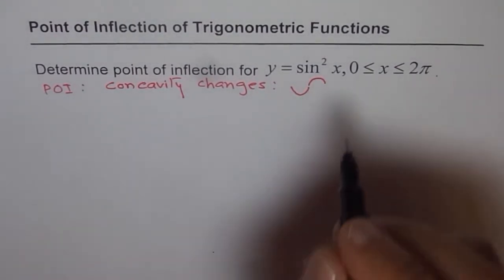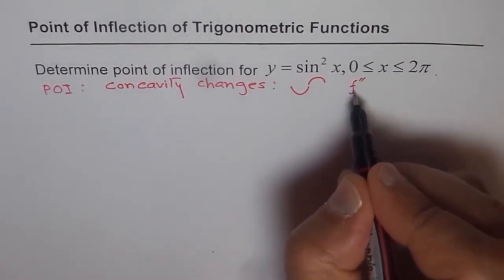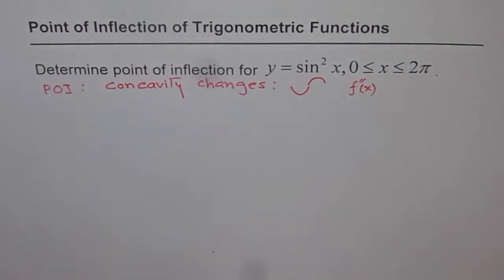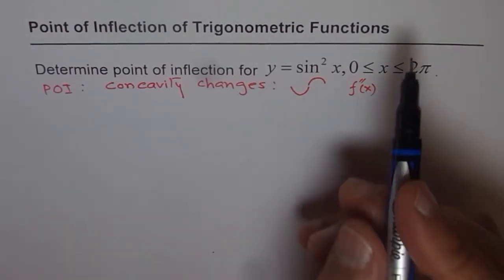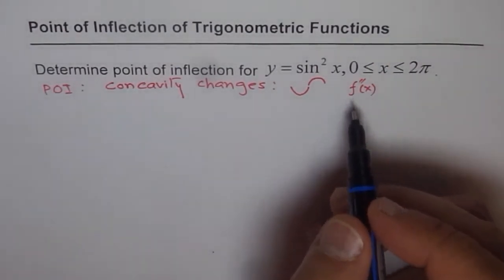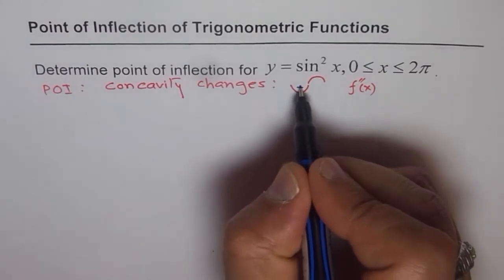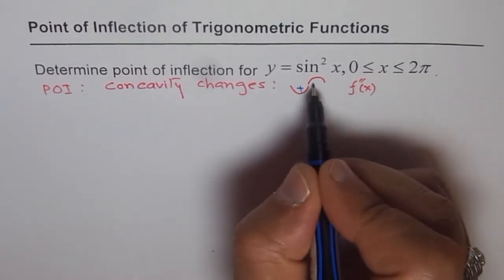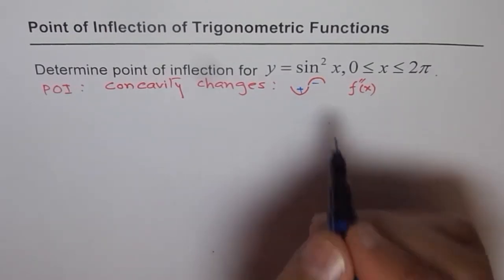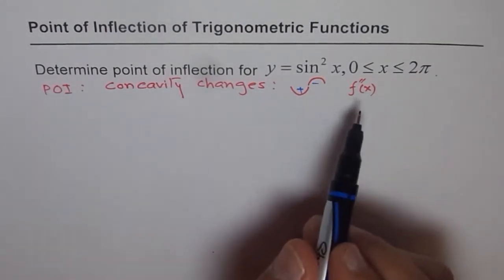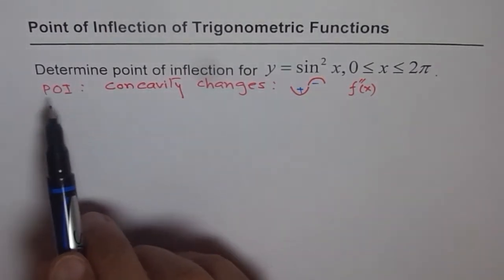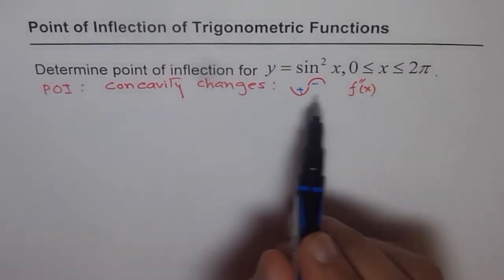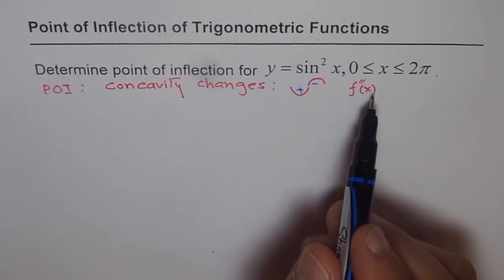Concavity is tested with the help of the second derivative. If the second derivative is positive, it is concave up. If the second derivative is negative, you get concave down. So, a point of inflection is a concavity change, which we determine with the help of the second derivative test.